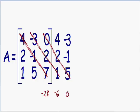Now we have multiplied all three diagonals going from top to bottom. Next, we need to do the exact same thing with diagonals going from the bottom to the top. I'm going to create three diagonals from bottom to top. Multiplying the first bottom-to-top diagonal: 1 times negative 1 is negative 1, and negative 1 times 0 is equal to 0.